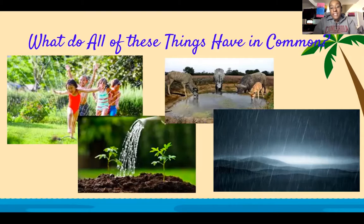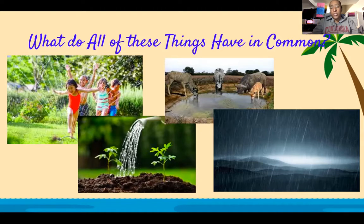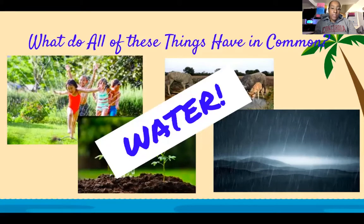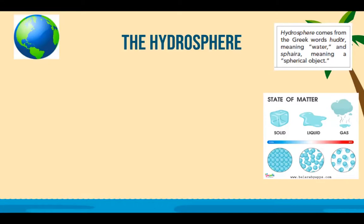When you look at these pictures, what do they all have in common? Obviously, water — if you look at every one of these pictures, water is involved. Even if you look at the plant, plants need water to grow. So what is the hydrosphere? In your textbook it mentions that the hydrosphere comes from the Greek words meaning 'water' and 'spharia,' which means a spherical object — so a sphere of water.